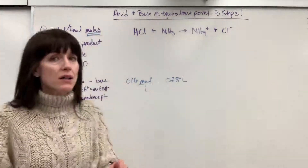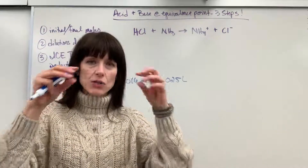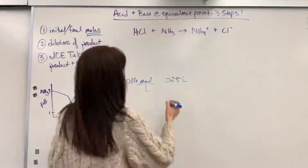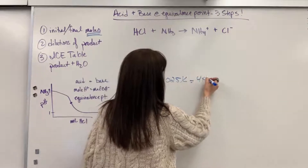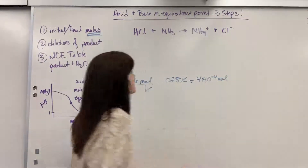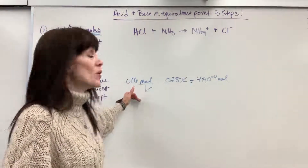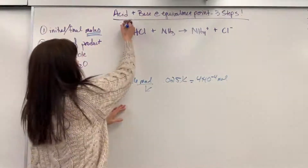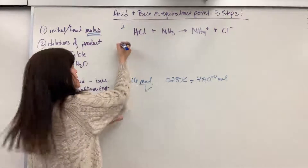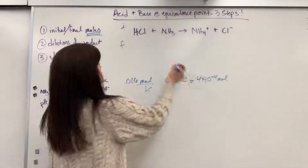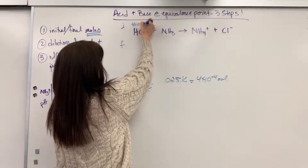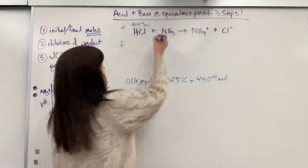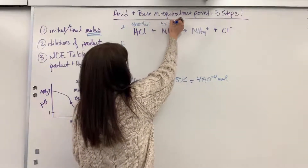I'm not looking at molarity, I'm looking at moles. I need to see the actual moles reacting. So when we multiply 0.016 molar by 0.025 liters, we get 4×10⁻⁴ moles — liters cancel, giving 4×10⁻⁴ moles. That was for both the ammonia and the hydrochloric acid since they had the same molarity and volume, so both give us 4×10⁻⁴ moles.